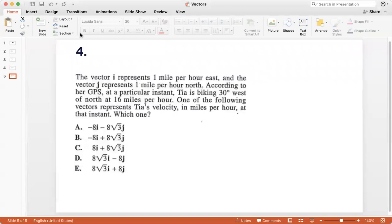The vector i-cap represents 1 mile per hour east and the vector j-cap represents 1 mile per hour north. So this is similar to the previous question, i-cap on the positive x-axis and j-cap on the positive y-axis. According to her GPS at a particular instant, Tia is biking 30 degrees west of north at 16 miles per hour.